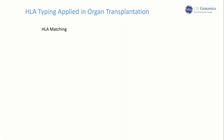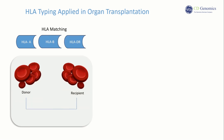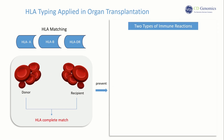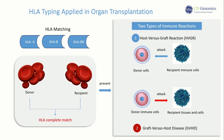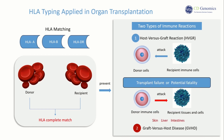HLA matching mainly focuses on HLA-A, HLA-B, and HLA-DR loci. A complete match between donor and recipient HLA is necessary for hematopoietic stem cell transplantation to prevent two types of immune reactions: the first involves the patient's immune cells attacking the transplanted donor cells, known as host versus graft reaction, resulting in transplant failure. The second reaction, graft versus host disease, occurs when the donor's immune cells attack the patient's tissues and cells, particularly affecting the skin, liver, and intestines, leading to severe symptoms and potential fatality.